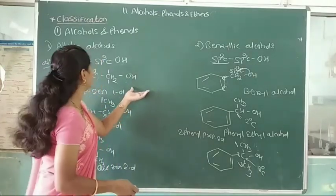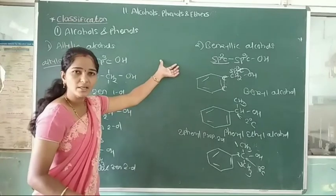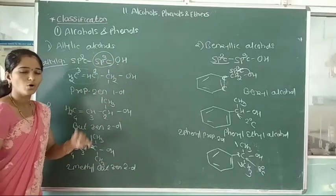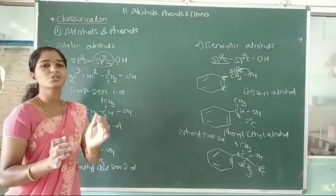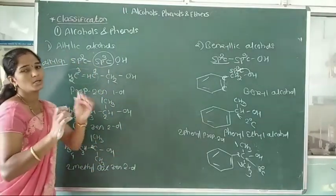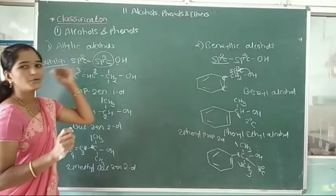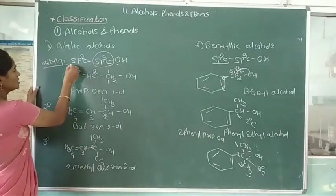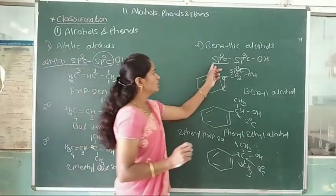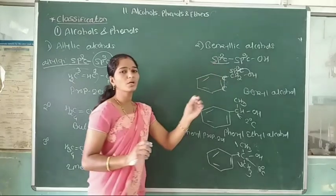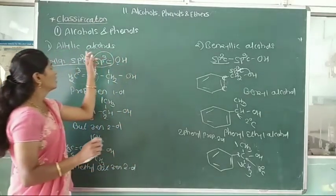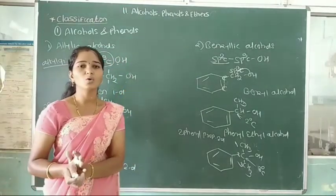The difference between allylic and benzylic alcohols: in both, the OH group is on an sp3 carbon further bonded to an sp2 carbon. In allylic alcohols, the sp2 carbon is present in an alkyl group (C=C double bond). But in benzylic alcohols, the sp2 carbon is part of a benzene ring — that is the difference between allylic and benzylic alcohols.